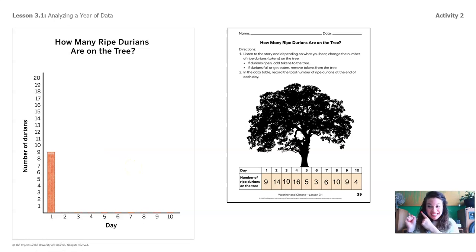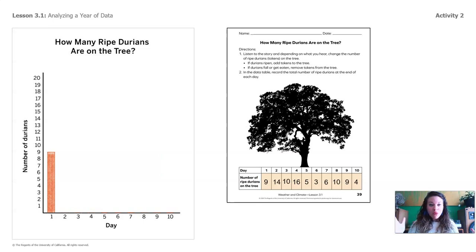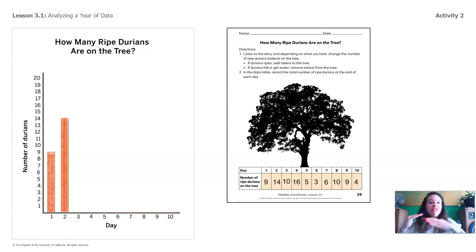There it is! Do you see it? Does it make sense to you now why we call it a bar graph? Because we use bars that go up to mark a certain number. How far does the bar need to go up for day 2? Look at the data. Yeah, it needs to go up to 14. I marked on the bar graph 14 durians on day 2.